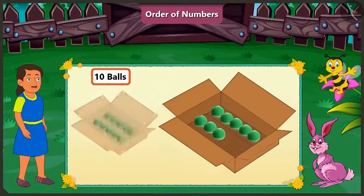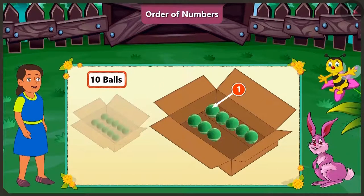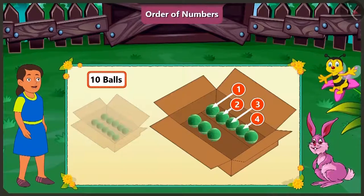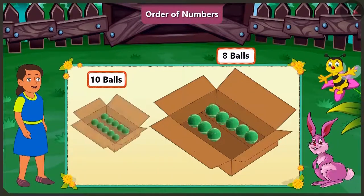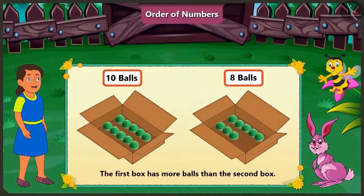And the second box has one, two, three, four, five, six, seven and eight balls. So the first box has more balls than the second box.